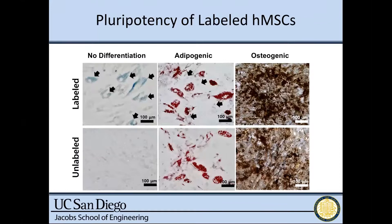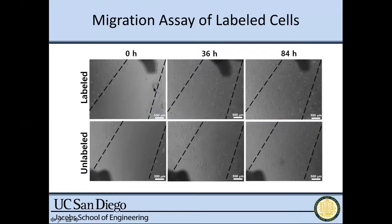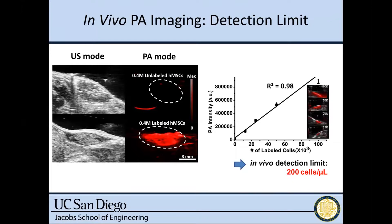This data shows that the pluripotency of the stem cells is retained. We took cells labeled with particles and control cells, then directed them toward a fat-like (adipogenic) lineage or bone-like (osteogenic) lineage — both labeled and unlabeled cells could differentiate into both lineages. We also looked at migration: both labeled and unlabeled cells can migrate into a region where cells had been removed, and they're also proliferating, so we're getting more cells over time.